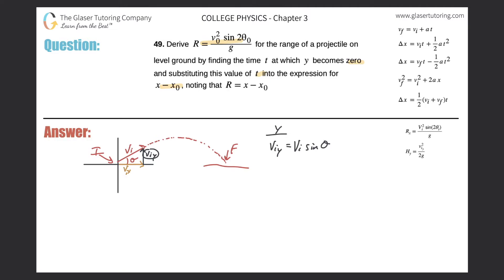The final velocity in the y direction has the same magnitude as the initial due to symmetry, but opposite sign: negative v_i times sine of theta. The change in y displacement is zero, since the projectile starts and ends at the same height. The acceleration is due to gravity: negative 9.80 m/s², which we'll write as negative g.